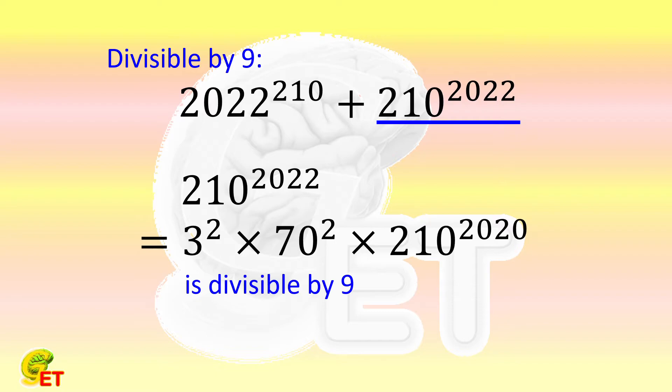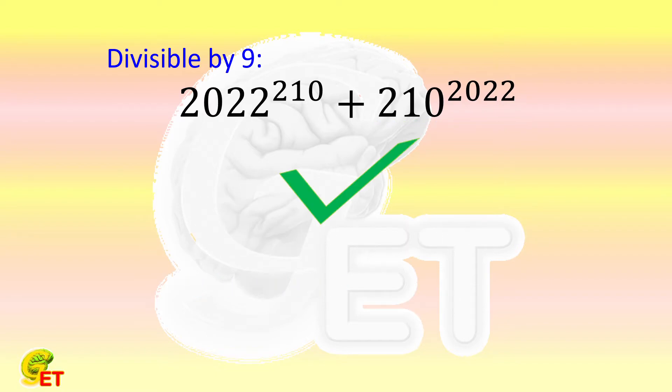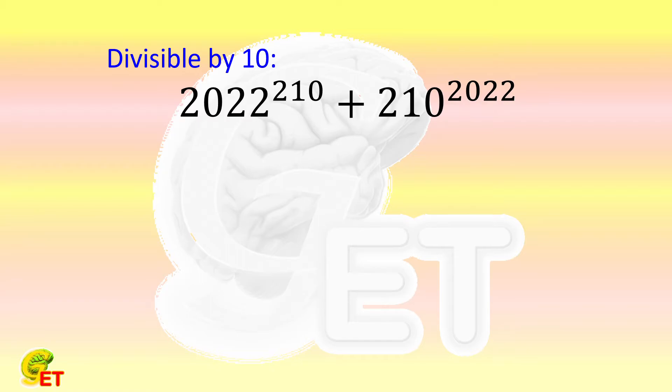So this big number is divisible by 9. Let's then check if it is divisible by 10. The number which is divisible by 10 must have 0 at its 1's place.